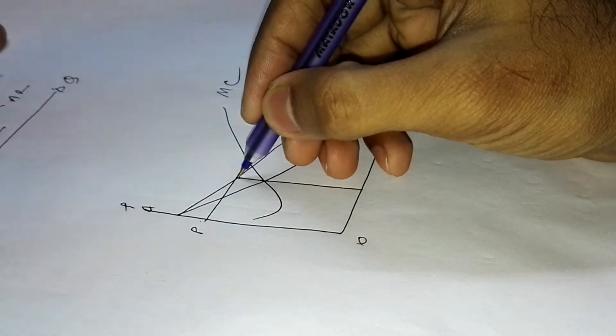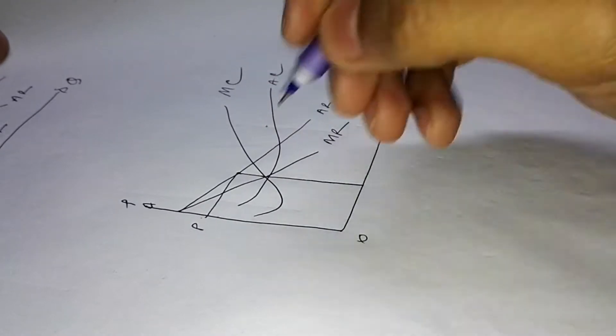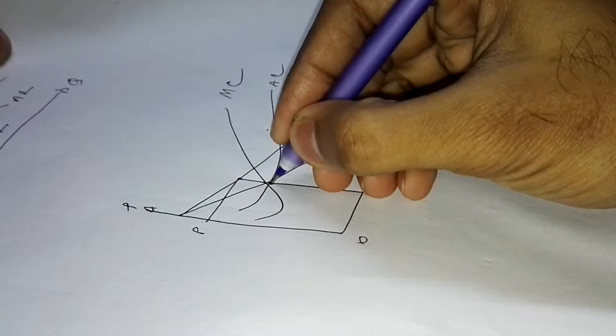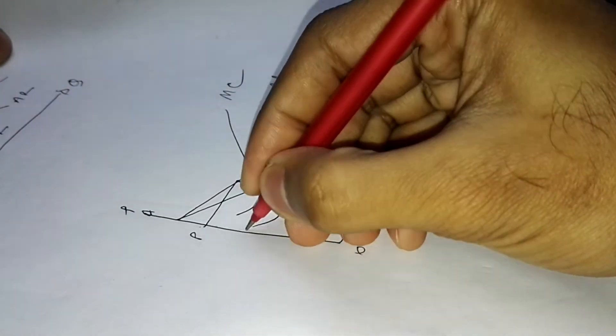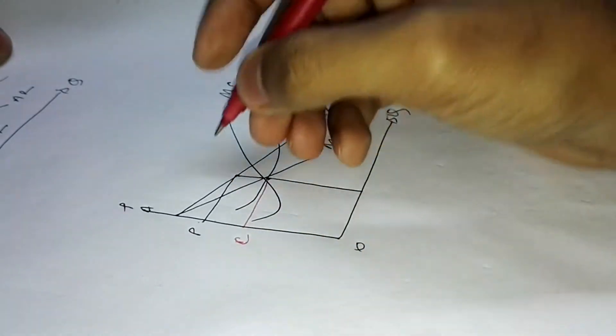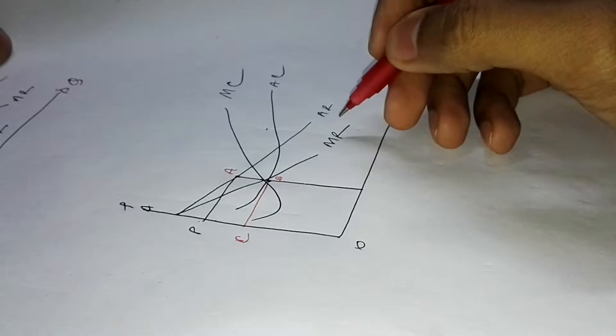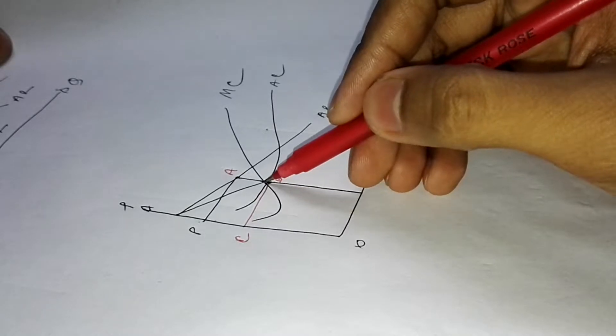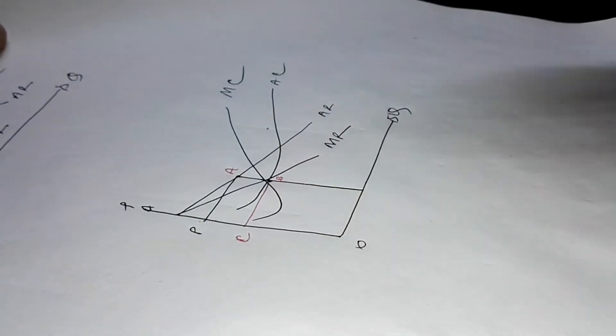The AC intersected here somewhere at this point. Let's draw a line from this point and assume this is C, A, and the point where it intersected AC is B. This is not the point where MC intersects - it could be different, maybe both are different.